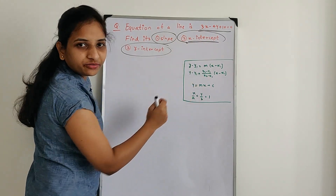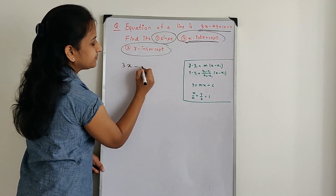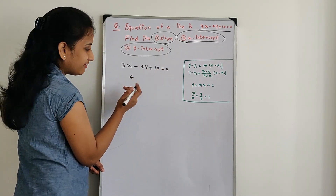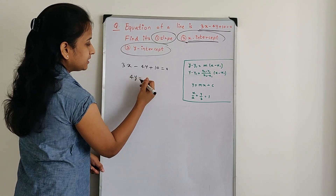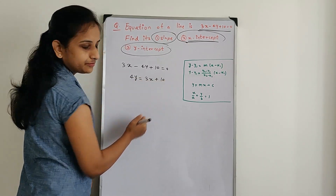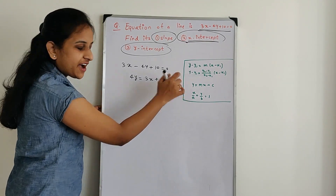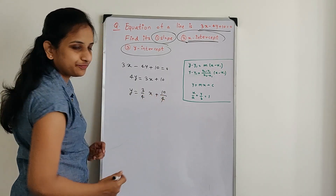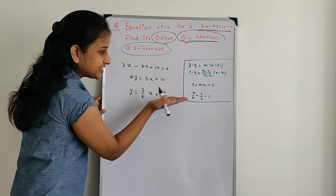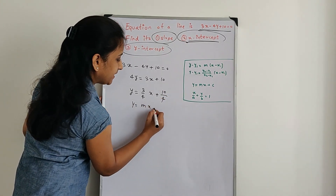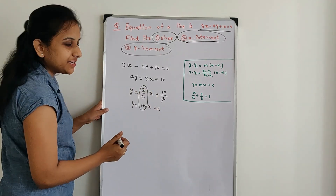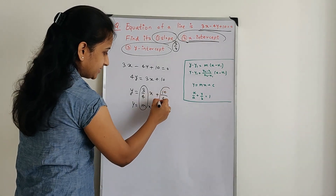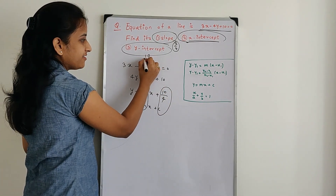I am bringing this equation into the slope intercept form. The equation is 3x minus 4y plus 10 equal to 0. I want y on one side and the other terms on the other side. So y equals 3 by 4 x plus 10 by 4. Comparing this with y equal to mx plus c, my slope m is 3 by 4, and the y-intercept c is 10 by 4.